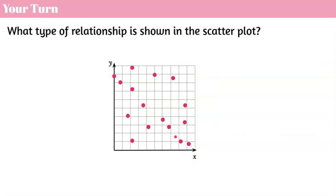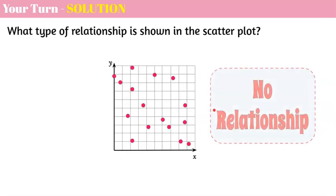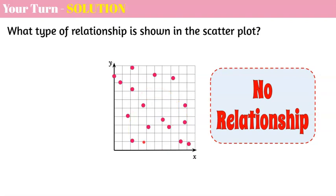Your turn again. I'd like you to pause the video here and determine what type of relationship is shown in the scatterplot. Come back and hit play when you're ready. Welcome back. Here's our solution: no relationship. You can see that I can't draw a line or a curve — there is no pattern to these points on the scatterplot. They are truly scattered.